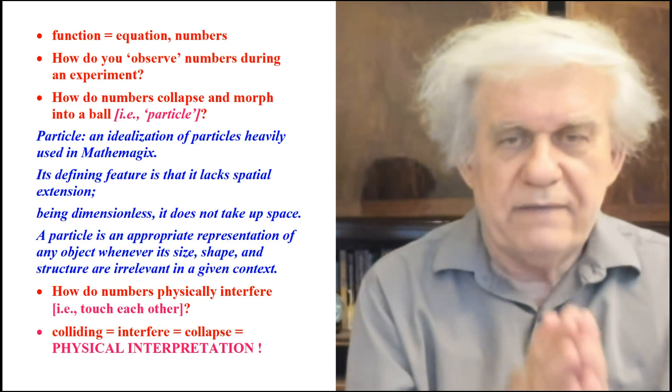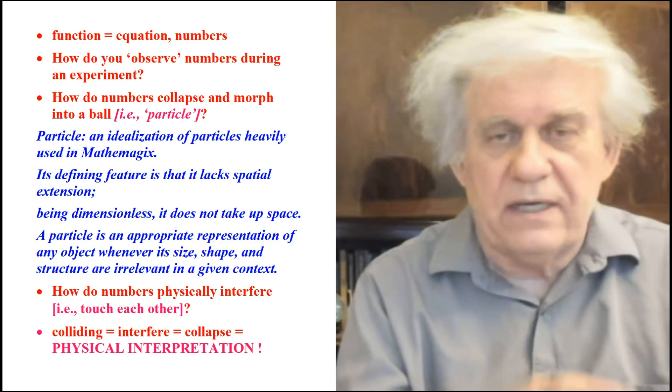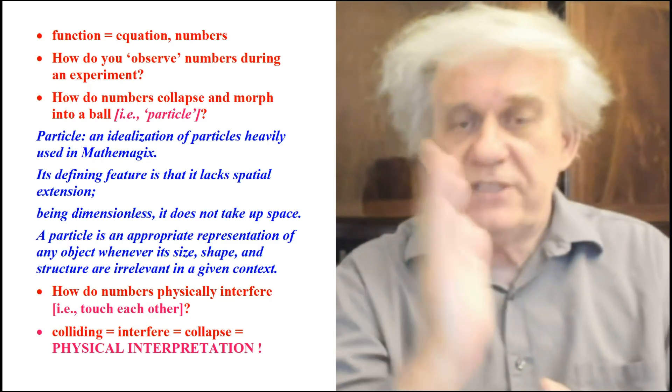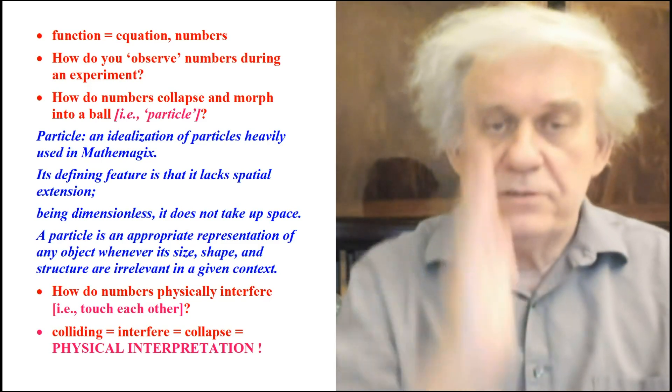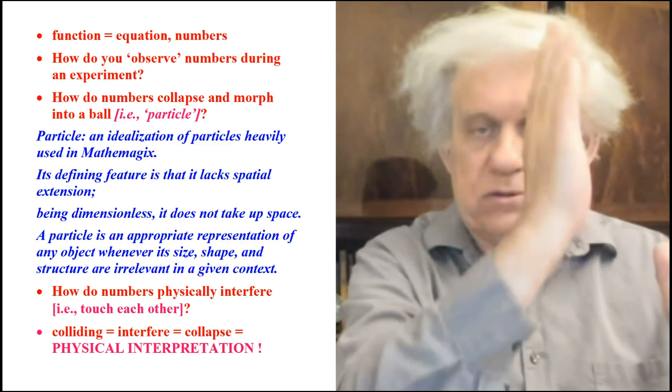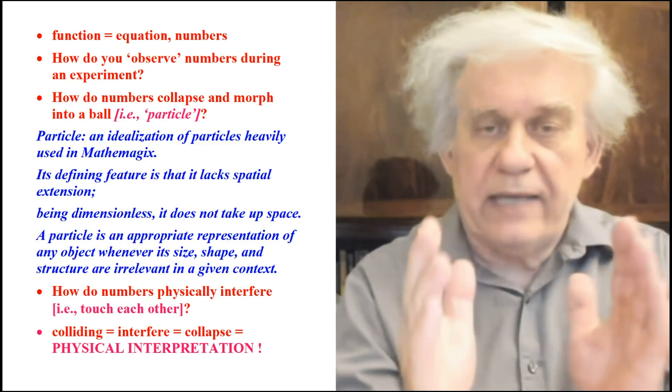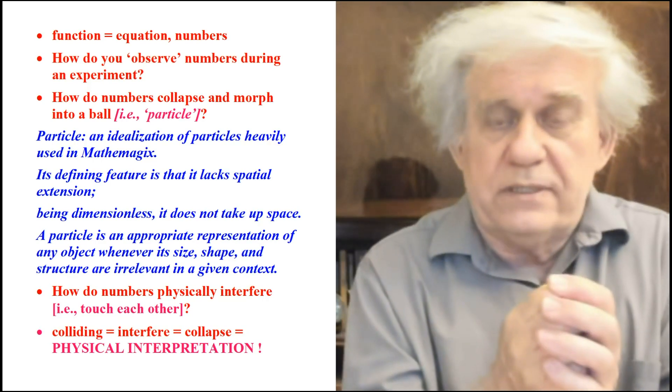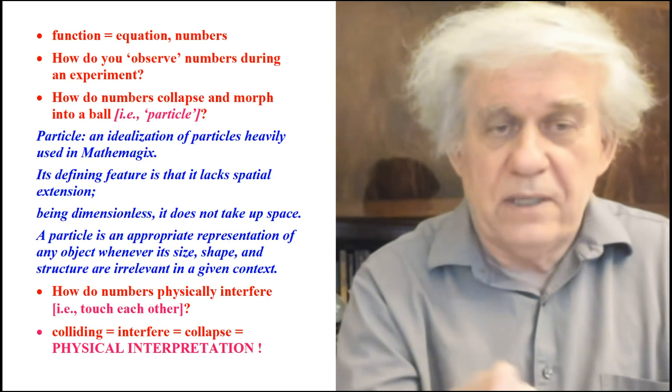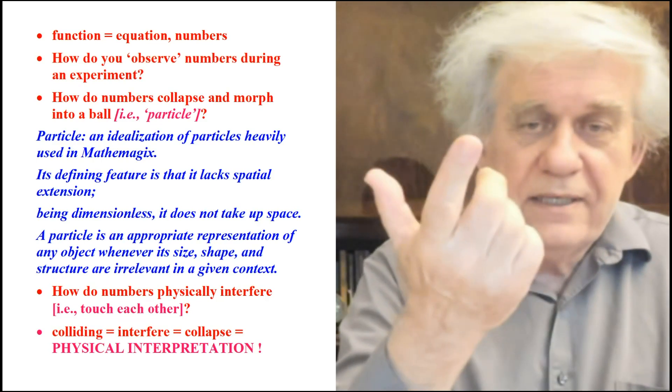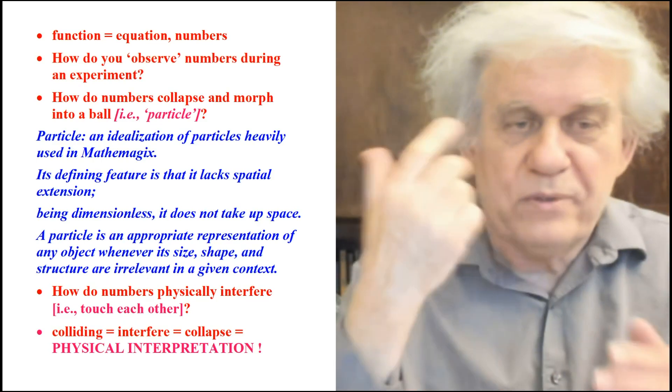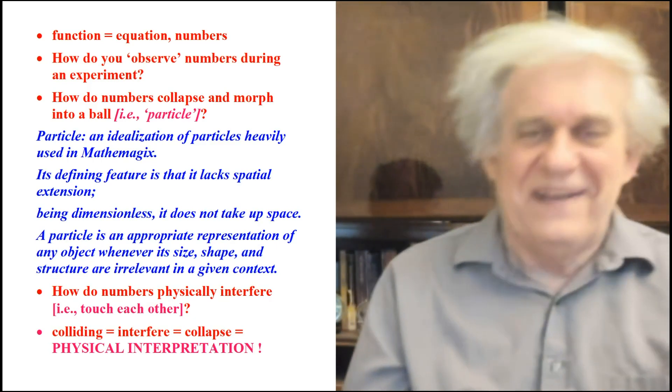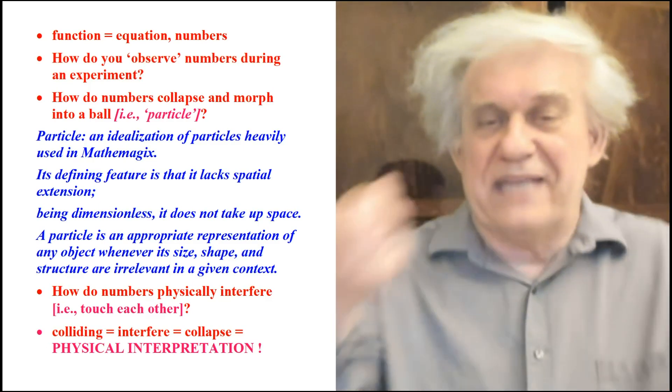It says a particle is an appropriate representation of any object, whenever its size, shape, and structure are irrelevant in a given context. So they're talking about first a wave function. What is a wave function? A bunch of vectors. What is a vector? It's got magnitude and direction. And you have a bunch of these arrows, which represent magnitude and direction, and they're moving sideways, perpendicular to those directions, right? They're moving sideways and suddenly all these vectors, numbers, right? They collapse to what they call a particle, which is what? No spatial volume, no dimension. Dimensions, they take up no space. Basically they just talk about a location that stores properties. Exactly. That they measured.